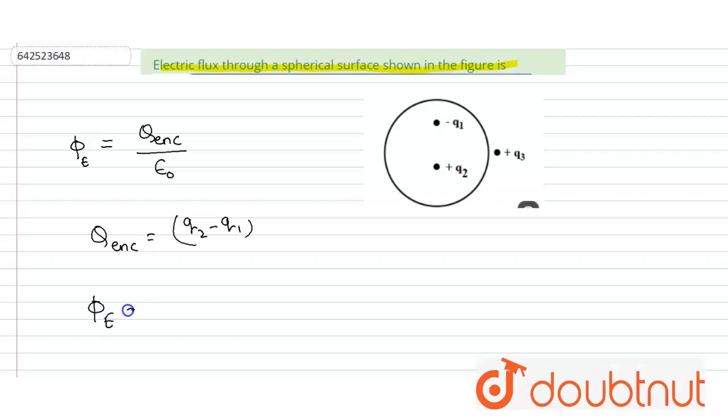So, the flux Phi E will become Q2 minus Q1 divided by epsilon naught. This is the electric flux. So, this is the answer. Thank you.